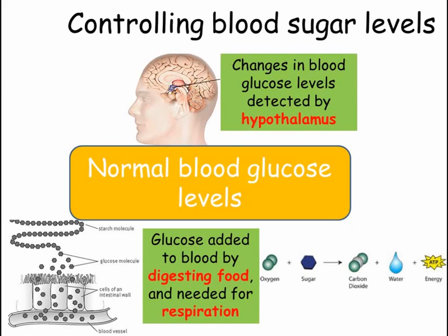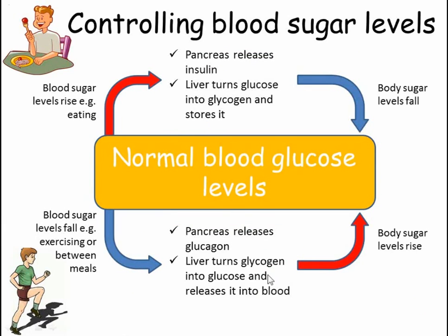Glucose is needed by the body for respiration, where it's broken down to release energy. Glucose levels in the blood are increased after eating, when the digestive system breaks down starch into glucose and absorbs it into the blood. If glucose levels are too high, there's a risk of blindness and possibly coma. If glucose levels fall too low, then the cells will not have enough glucose to respire and work properly. As we don't eat constantly, our bodies must be able to control the level of glucose in our blood to keep it at a constant level.